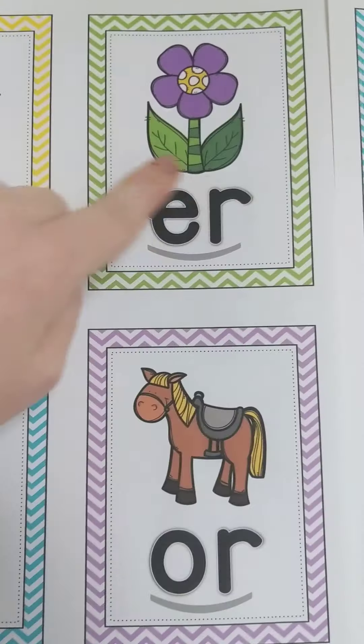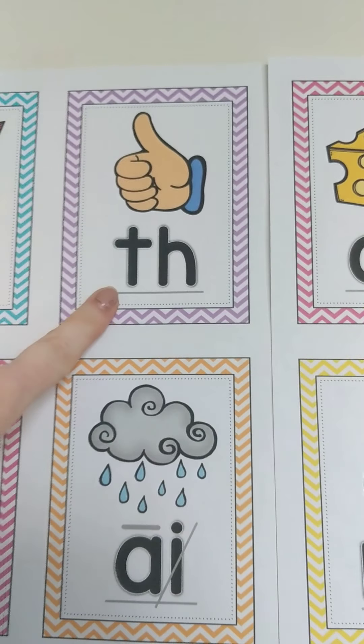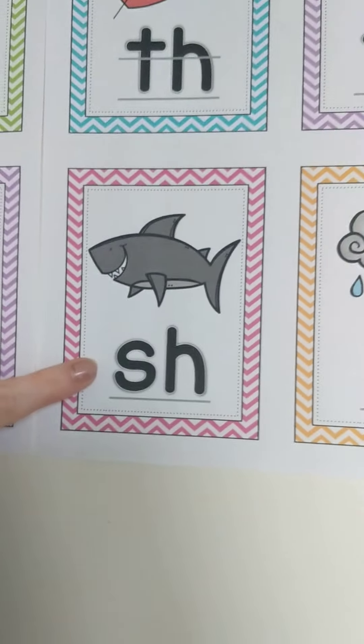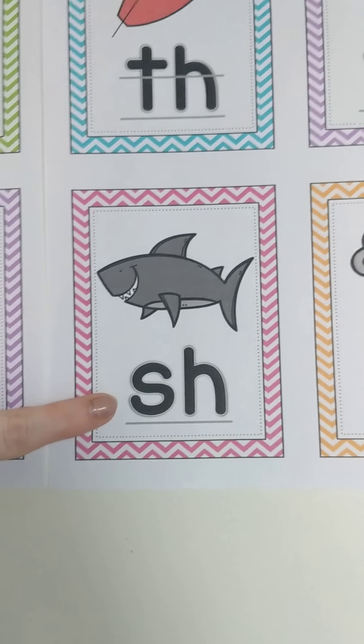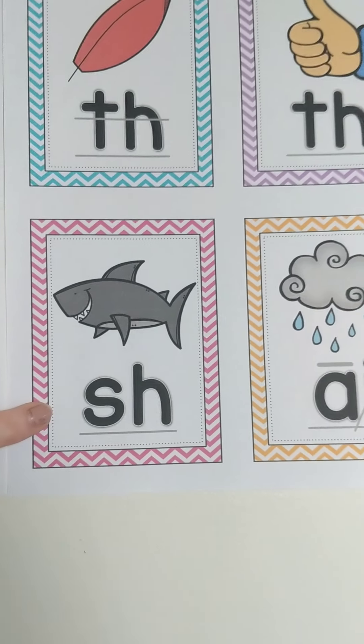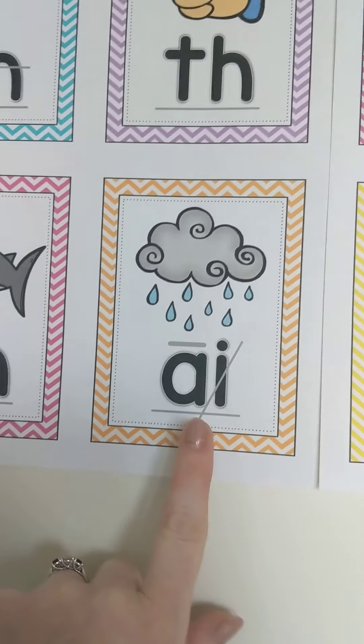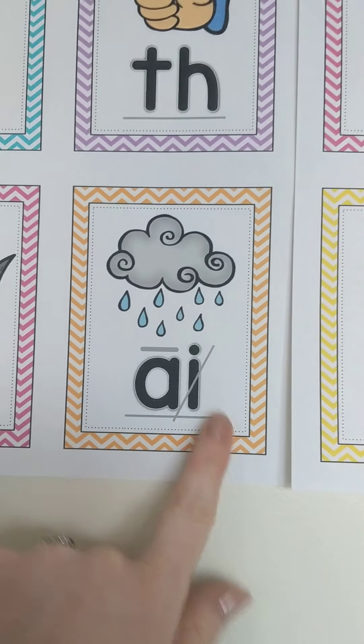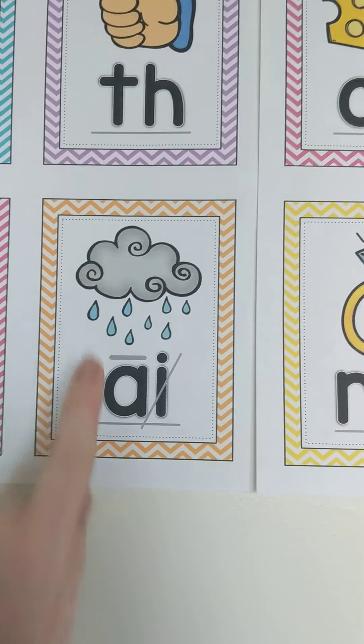Then we have digraph T-H, thumb, th. Remember, that's the only time you're allowed to stick out your tongue. Oh, Miss Henry's favorite — digraph S-H, shark, sh. Digraph A-I, rain, a. Digraph C-H, cheese, ch.